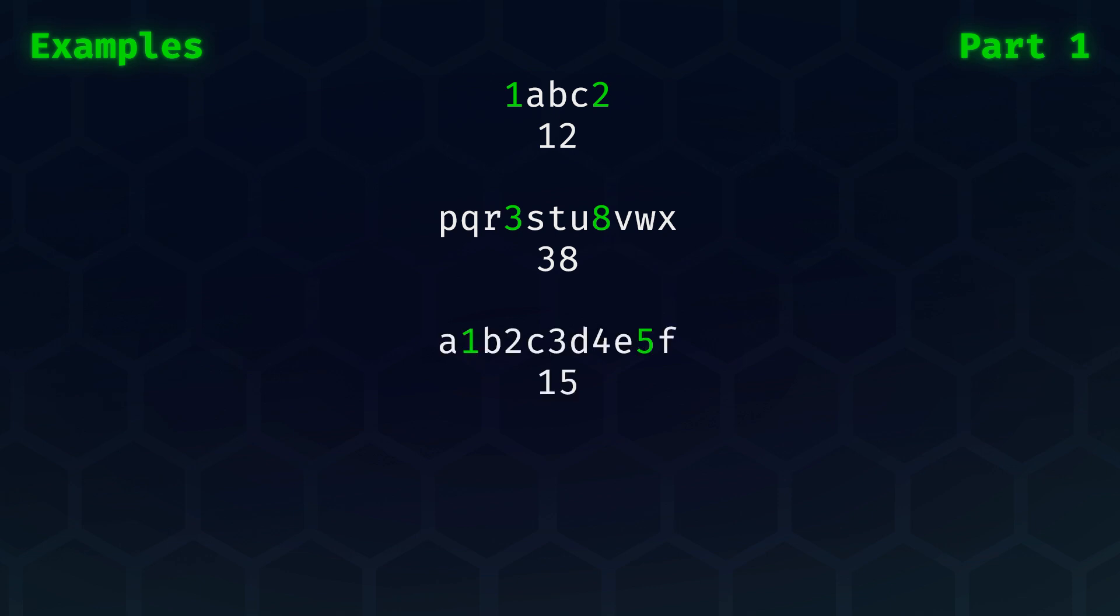In the next example, we clearly see that we only take the leftmost and rightmost numbers for a value of 15. Lastly, in this example with only a single digit, the digit gets repeated for a calibration value of 77.